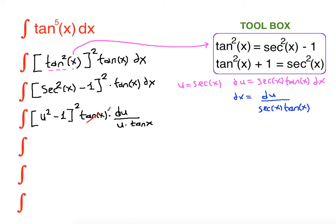Tangent x is cancelled out and we are left with u squared minus 1 squared over u du. Now we are going to FOIL u squared minus 1. U squared minus 1 FOILed is u to the fourth minus 2u squared plus 1 divided by u.